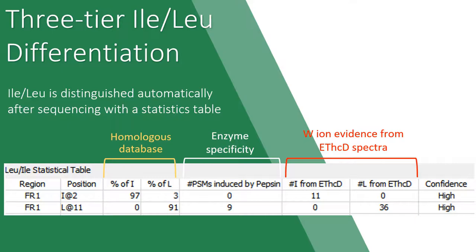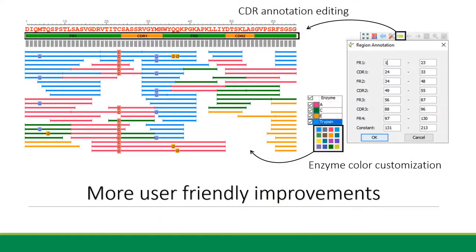We also added a region column to help users clearly see whether the IL residues are in either framework, CDR, or constant regions. To make the software more user-friendly, PICS-AB 2.0 allows users to change the region annotation positions and select different colors for enzymes if default settings are not optimal.